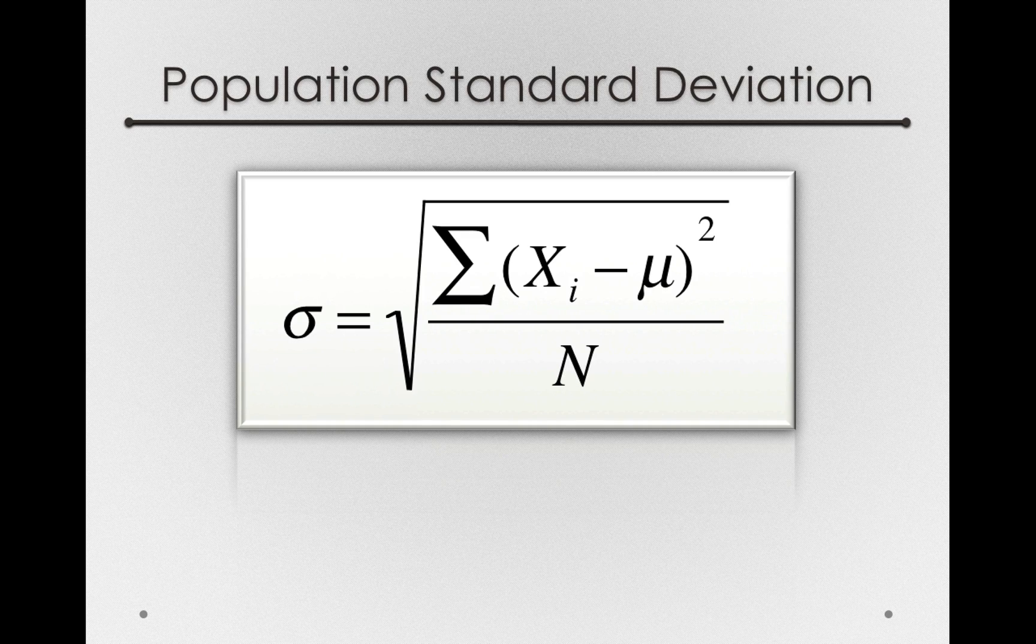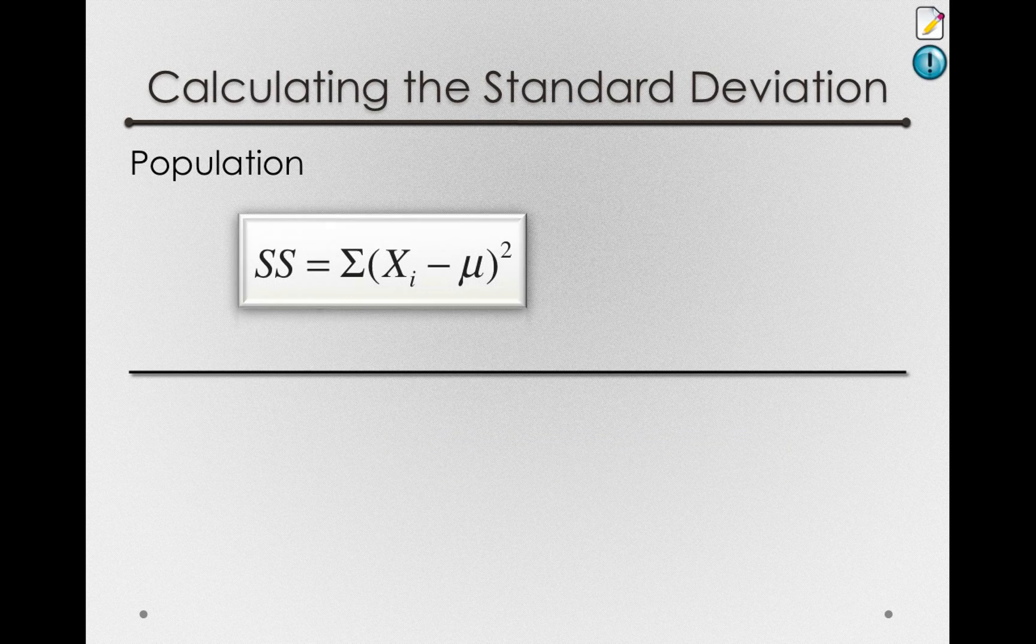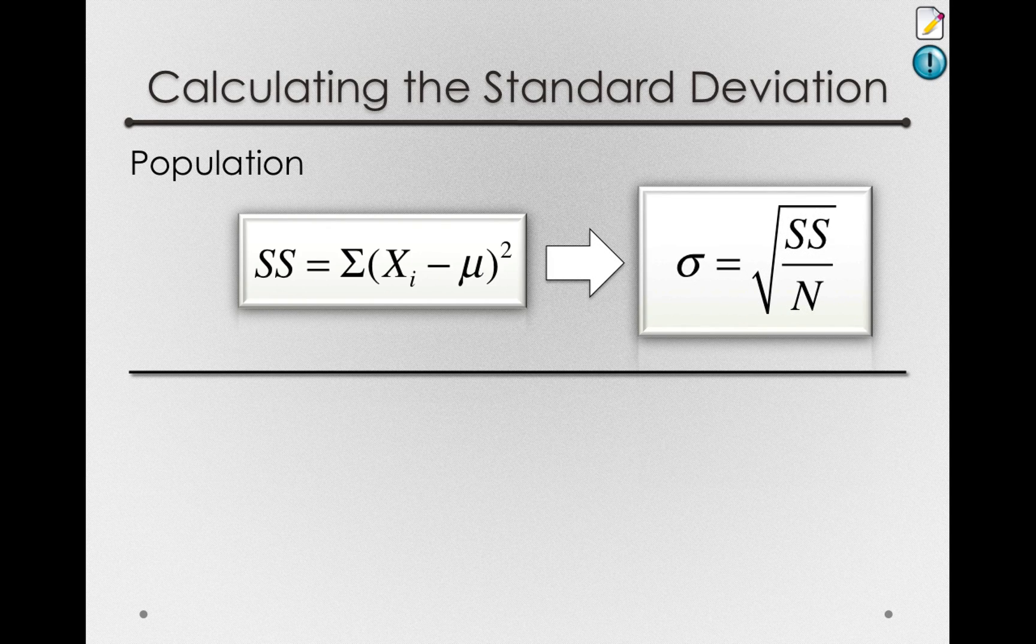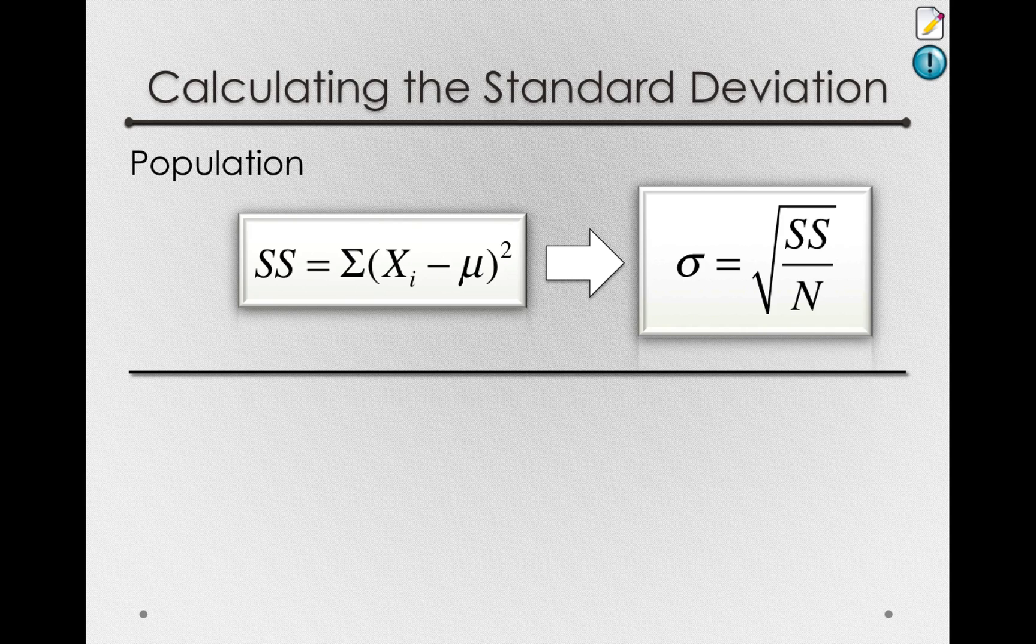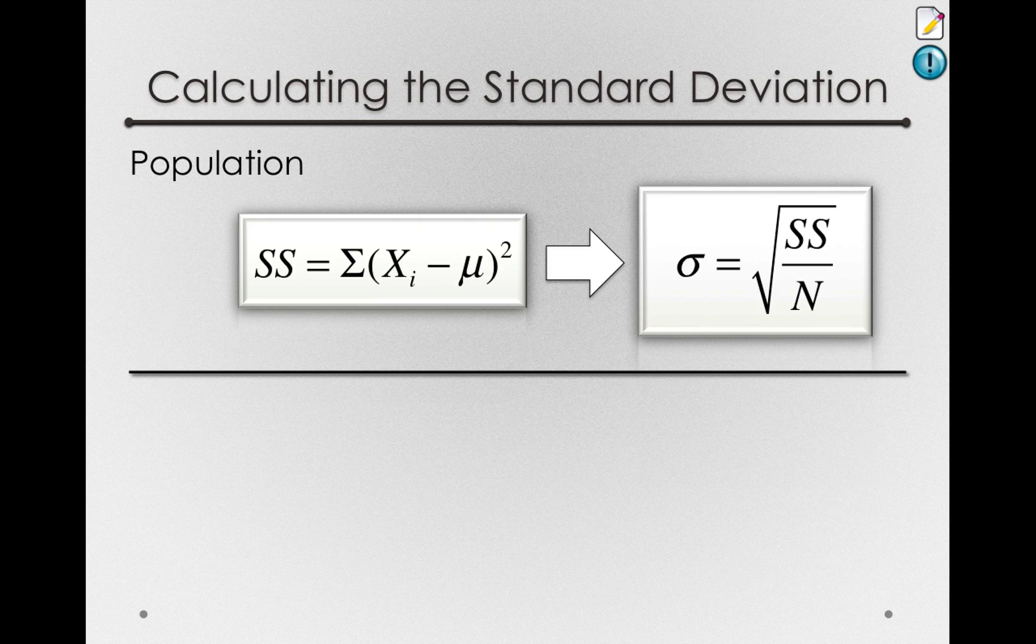Now for convenience, it'll be useful for us to break apart this formula into two steps. First, take the sum of squares, and second, operate on the sum of squares to find the value you want. Notice that to get a variance or to get a standard deviation, we'll always have to find the sum of square deviations. So it's useful to think of the sum of squares as their own thing. And then when we operate on the sum of squares to get the standard deviation, the variance, or any other quantity, we can do that second.